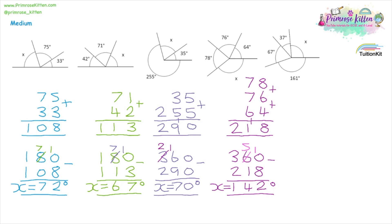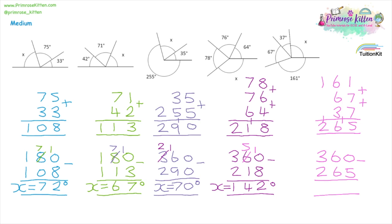Always the same method: add up all the clue angles, then take away from the total. For the final question, we have 161, 67, and 37 degrees as clues. Add them: 1 plus 7 plus 7 is 15, carry 1; 6 plus 6 plus 3 is 15 plus 1 is 16, carry 1; and 1 plus 1 is 2. So we have 265 degrees. Take it away from 360: borrow one, 10 take away 5, then 15 take away 6, and 2 take away 2 is zero. Our missing angle x is equal to 95 degrees.